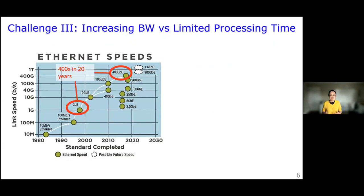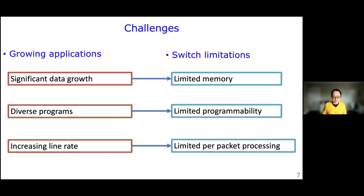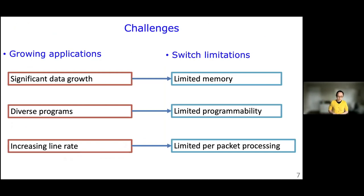The third challenge is that we have increasing bandwidth, meaning we can process more packets at a given time — that's good news. But on the other hand, for each individual packet we have more things to do because of all the applications around these packets, yet we have less time to process each packet given the growing bandwidth. In summary, there's a tension between growing application needs and switch limitations: applications need significant data, diverse programming, and increasing line rate, while switches have only limited memory, limited programmability, and limited per-packet processing.